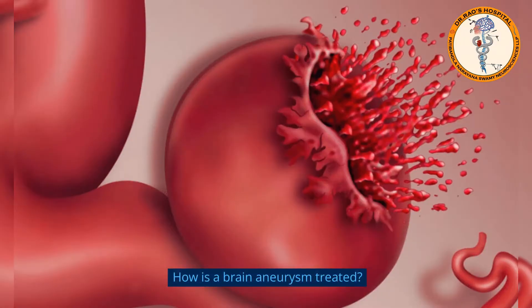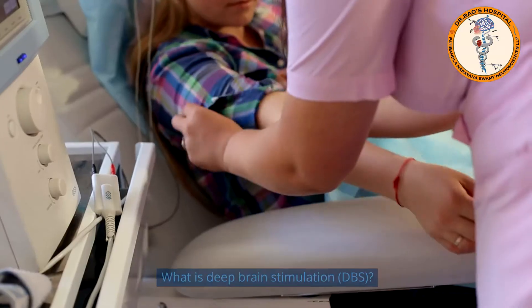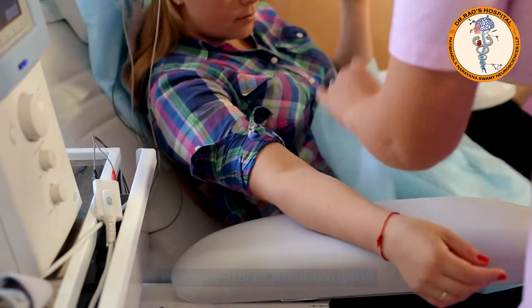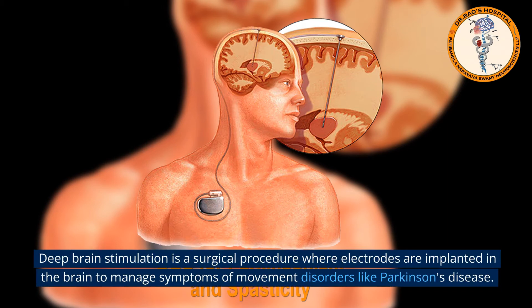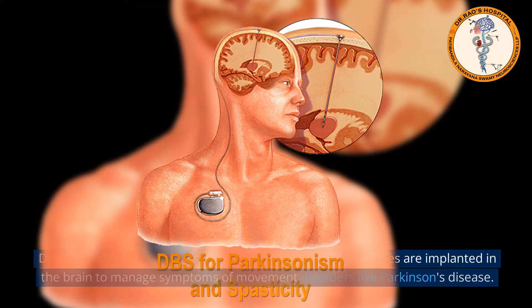How is a brain aneurysm treated? Treatment options include surgical clipping, coiling, or endovascular procedures to prevent the rupture of a brain aneurysm. What is deep brain stimulation (DBS)? Deep brain stimulation is a surgical procedure where electrodes are implanted in the brain to manage symptoms of movement disorders like Parkinson's disease.